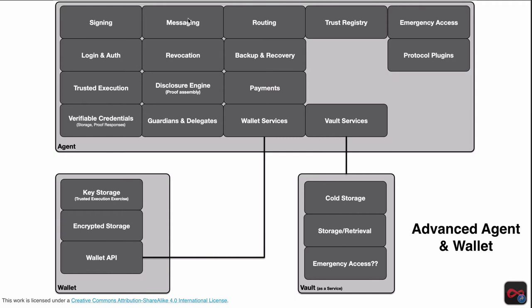Things like signing documents, messaging — that's a core thing for agents, which is why we're working on the sovereign Hyperledger Indy agent protocol to make it consistent. Some agents will need to do routing. There's a need for a trust registry. There's also emergency access — some groups have a 'break glass in case of emergency' concept where, if I'm incapacitated or unconscious and in dire need of medical help, you can get access to secured information. Apple has started to explore this with their Apple Health work. We also get into login and authentication.